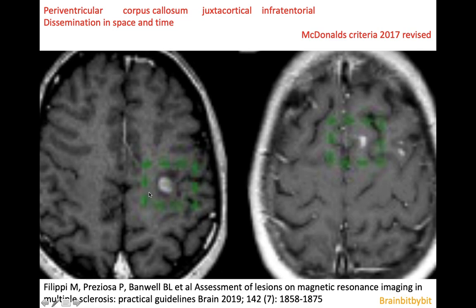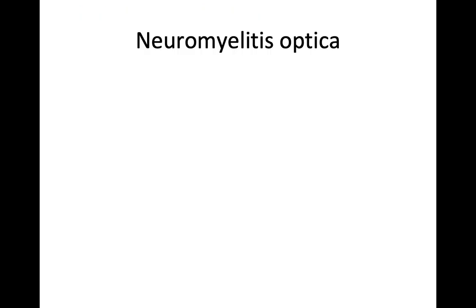It has been described that pre-existing lesions in multiple sclerosis can enhance again. This is thought to be caused by second waves of macrophages and macroglial cells migrating into the lesion, representing a second wave of inflammation and reactivation of the multiple sclerosis plaque.